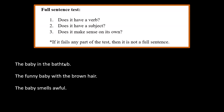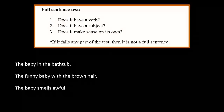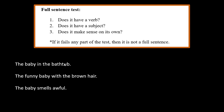Now we'll practice running our full sentence test, especially for 'does it have a verb?' Look at these three sentences — they all involve a baby, so the baby is the subject. Read each sentence and decide whether it's a fragment or a full sentence based on whether it has a verb. First: 'the baby in the bathtub' — do you see a verb? Second: 'the funny baby with the brown hair' — do you see a verb? Third: 'the baby smells awful' — do you see a verb?